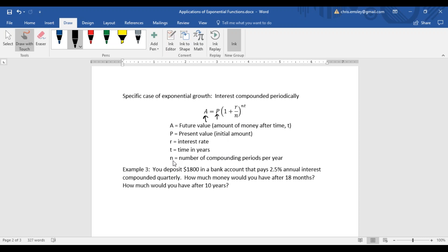n is the new variable here, number of compounding periods per year. If they tell you that interest is compounded semi-annually, that would be n equals 2 because it happens twice a year. If they tell you your interest is compounded quarterly, think four quarters in a dollar, that would be n equals 4.